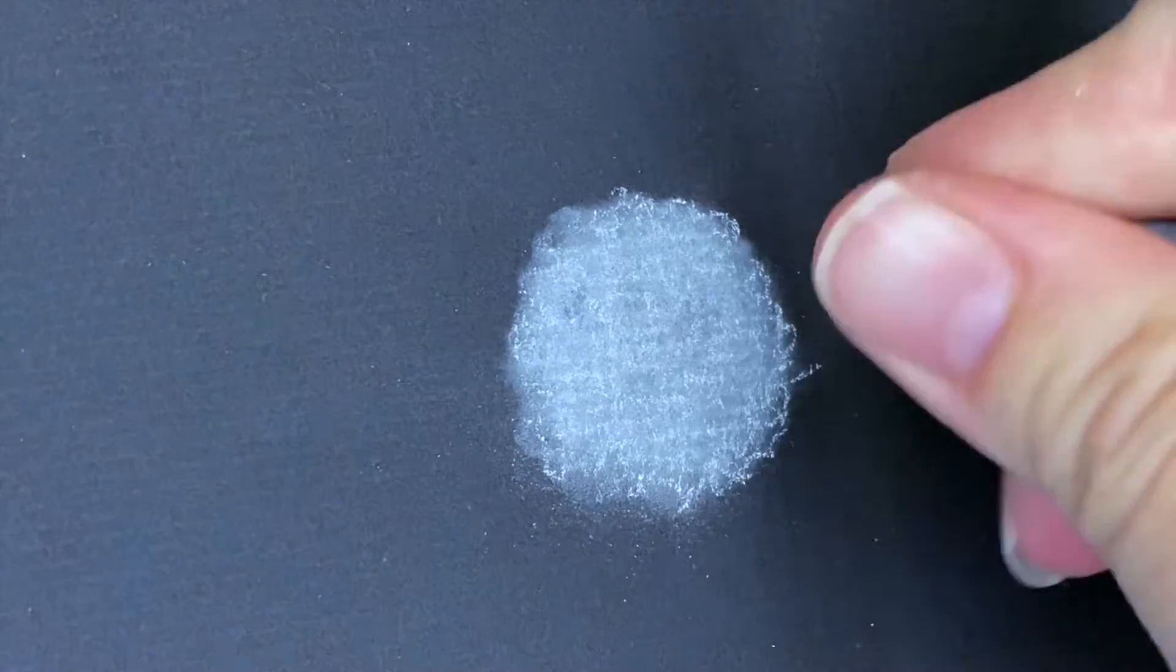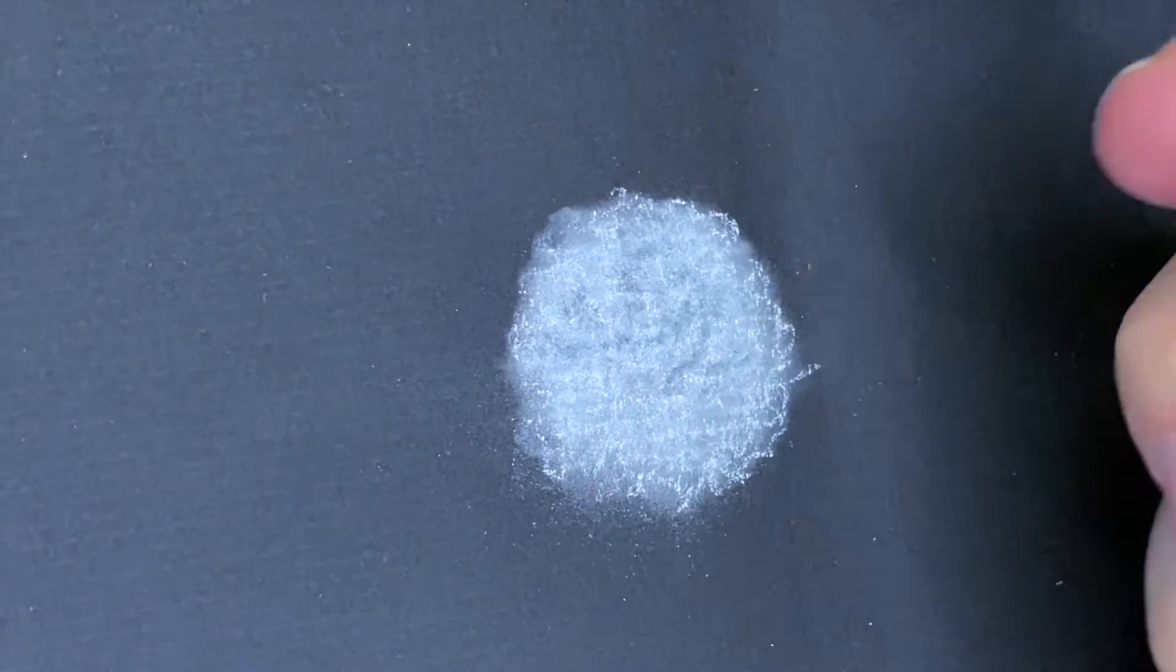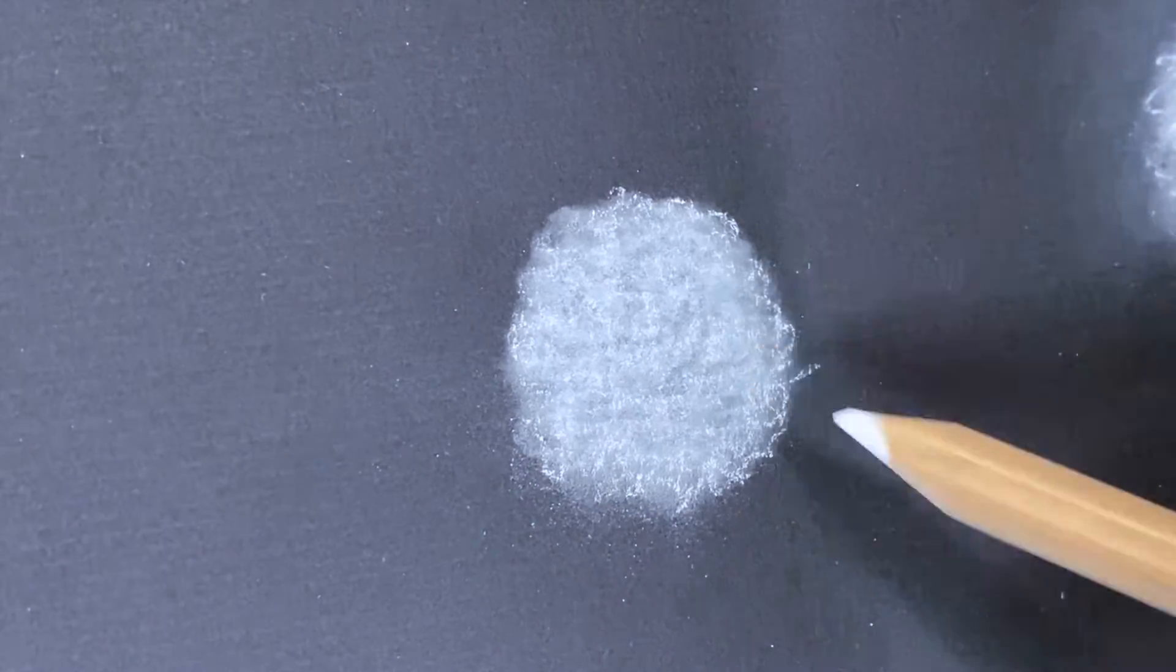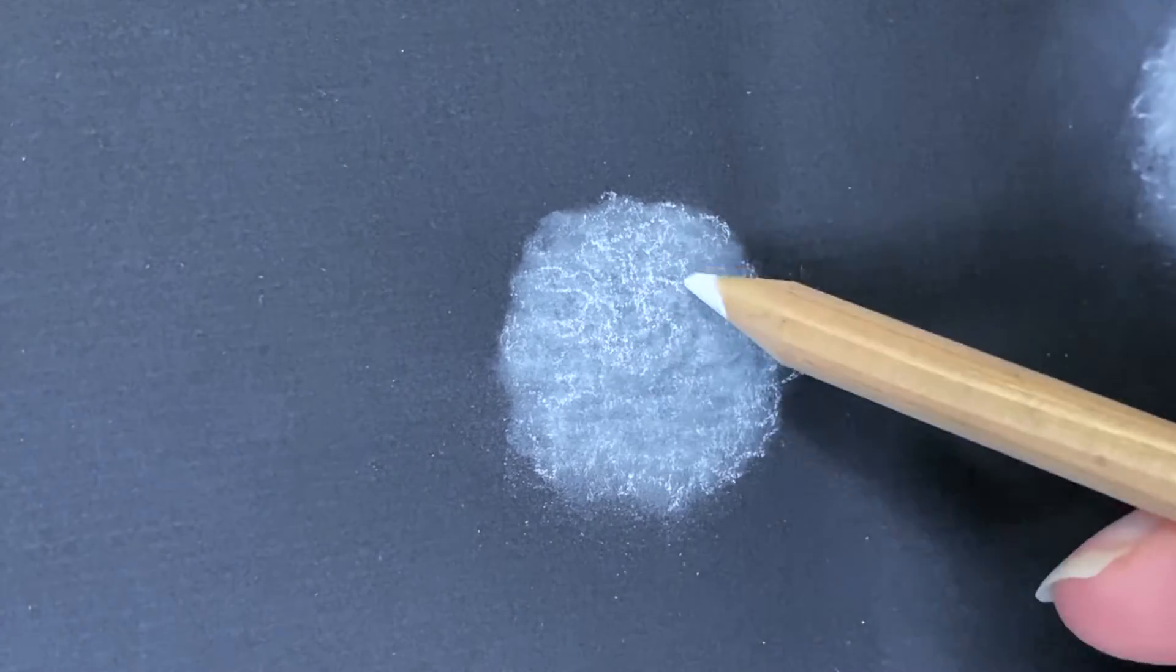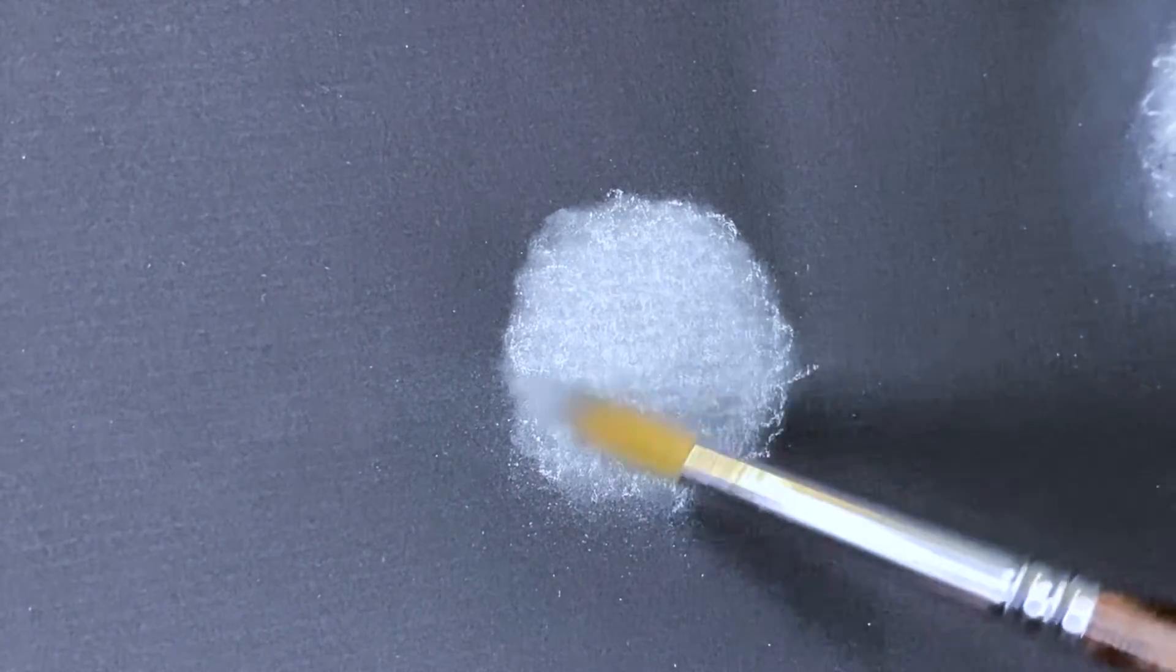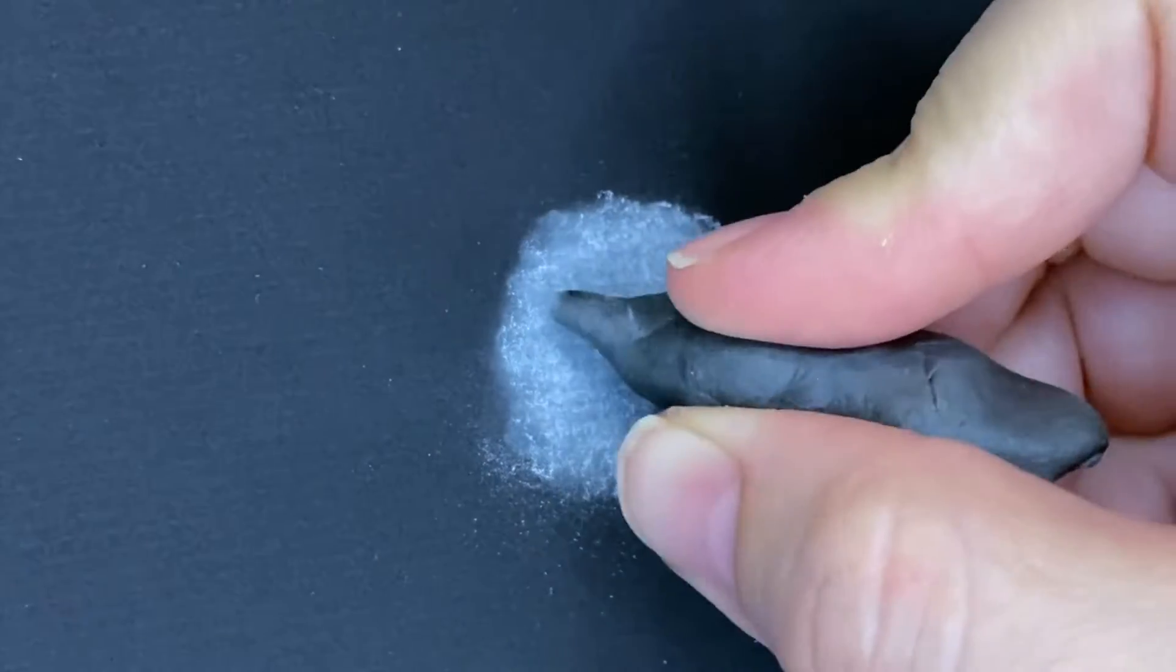And then I would use the kneaded eraser to recreate the skin defects like the freckles and everything. What makes the kneaded eraser so useful is you can mold it to different shapes, that way the skin that you're recreating doesn't look so artificial. It looks more natural.